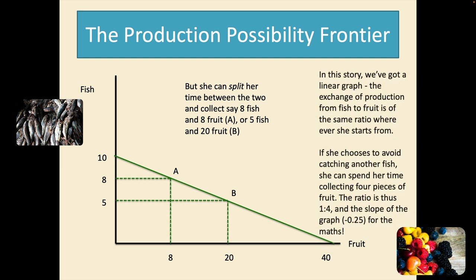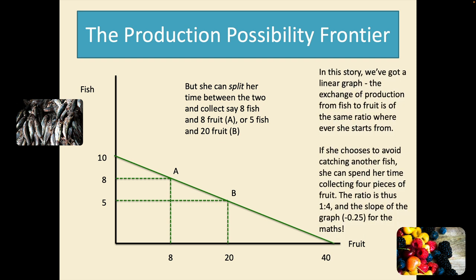In this story we're using a linear graph. It's a straight line graph from your basic maths. The exchange of production or what we call the marginal rate of transformation from fish to fruit is the same ratio wherever she starts from. So if she chooses to avoid catching another fish she can spend her time collecting four pieces of fruit. The ratio is thus one to four and the slope of the graph negative quarter.